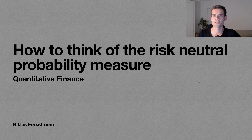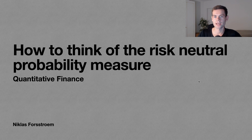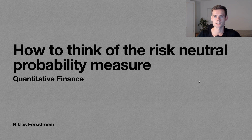Hey everyone and welcome to a video on how we can think about the risk-neutral probability measure in quantitative finance. Most people are probably familiar with the risk-neutral probability measure — we use it to price various instruments in financial markets, and a lot of people know the mathematical formalism. Not as many know the actual intuitive side of it: why we introduce it and how it's introduced. I wanted to take a few minutes to go over an illustrative example to make it clear what the risk-neutral probability actually represents.